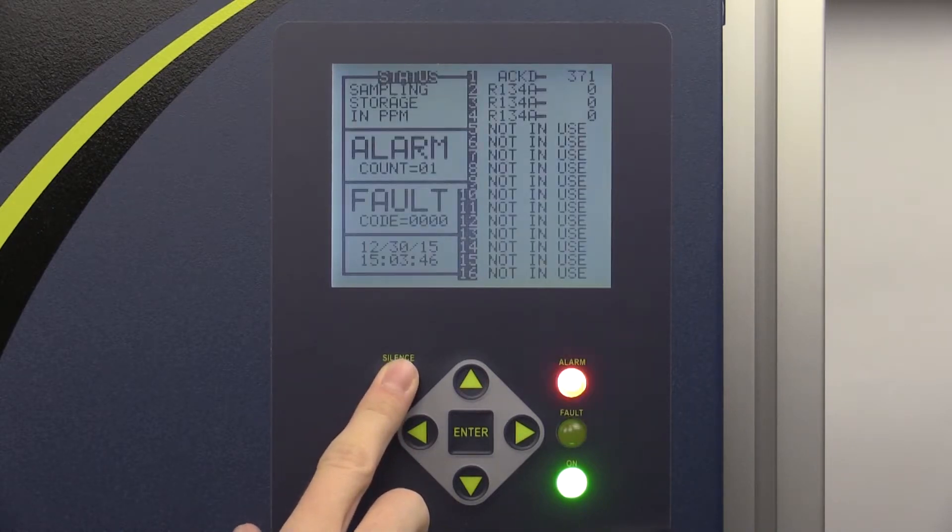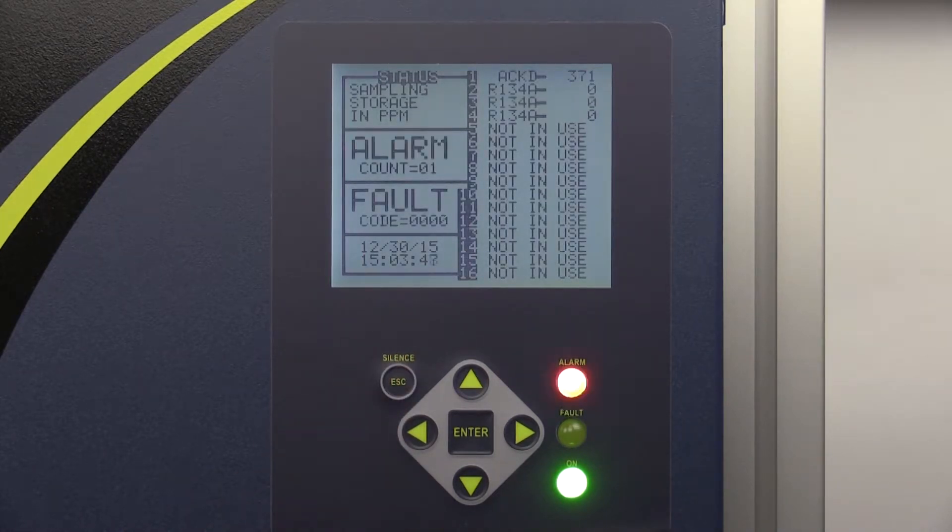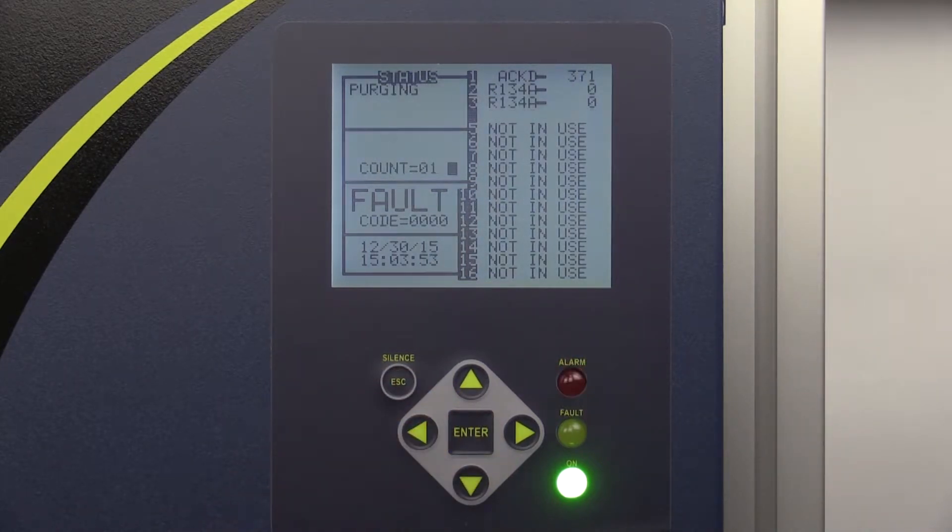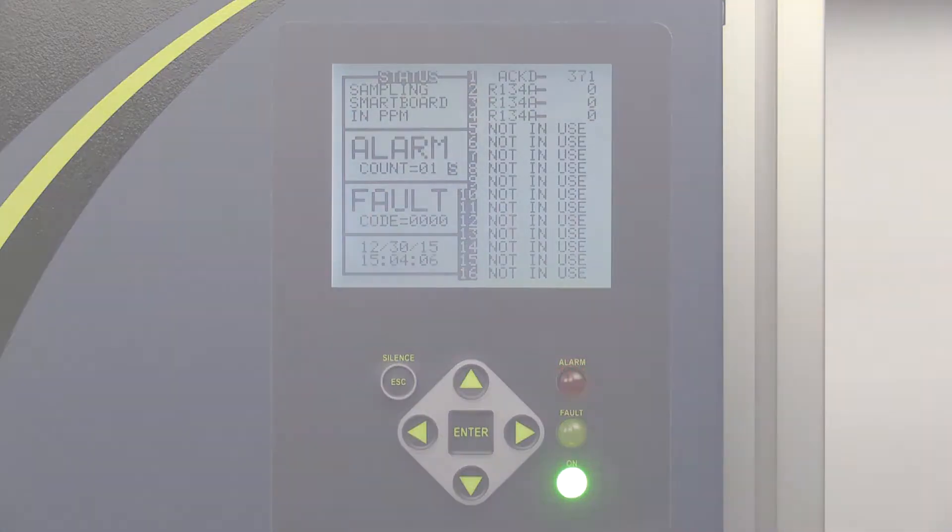Triggered alarms can be silenced by pressing silence and then enter on the main data display. In auto mode, the red alarm light will continue flashing until the PPM reading has fallen back to safety level. In manual mode, the red light will stay flashing until the alarm has been acknowledged and the PPM has reached a safe level.